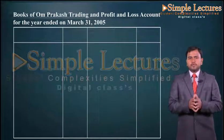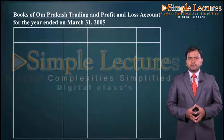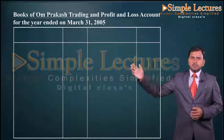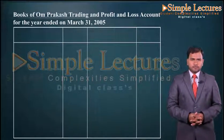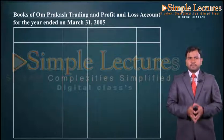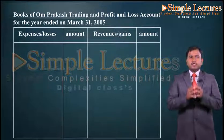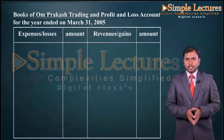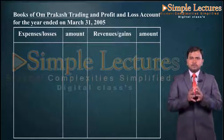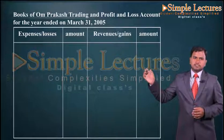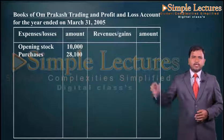By this information we have to prepare a trading and profit and loss account and a balance sheet. The title will be: in the books of Om Prakash, trading and profit and loss account for the year ended March 31st 2005. The format has expenses or losses on one side and revenues or gains on the other. In the trading account we record opening stock, closing stock, purchases, sales, and direct expenses. First, opening stock on the debit side: ten thousand. Then purchases: twenty eight thousand one hundred. Then cartage: two thousand.